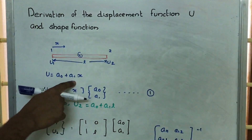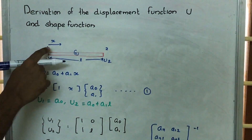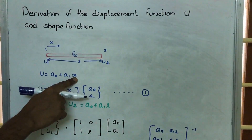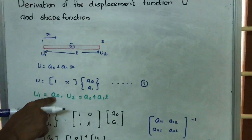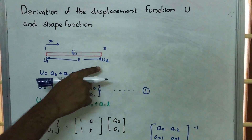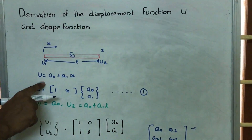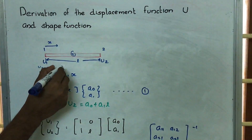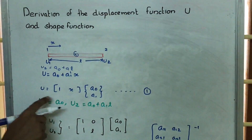Here a0 and a1 are unknowns, so we should find them. At x equal to 0, that is at node 1, displacement is equal to u1. So putting x equal to 0, we get u1 equal to a0. And at x equal to L, we get u equal to u2, so u2 is equal to a0 plus a1 times L. So we have obtained equations for u1 and u2.